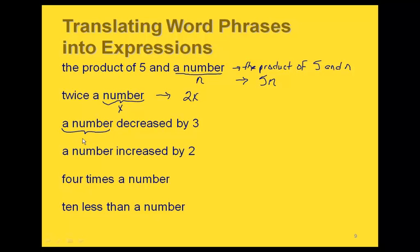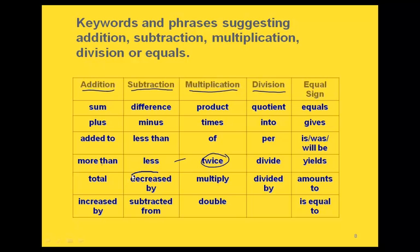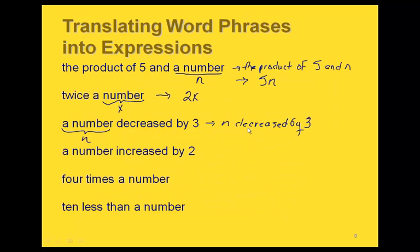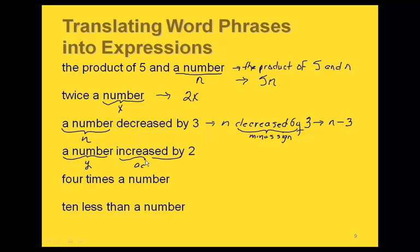'A number decreased by 3' — using n, gives n decreased by 3. Decreased by translates to subtraction, and the order follows the phrase, so the expression is n minus 3. Similarly, 'a number increased by 2' — using y — increased by translates to addition, giving y plus 2.